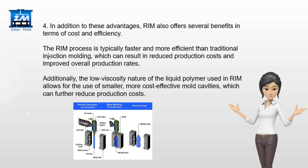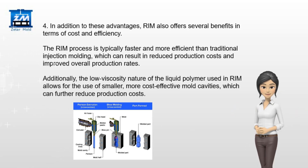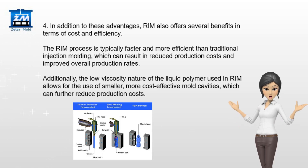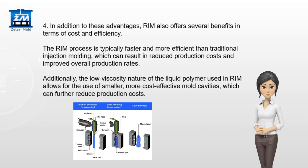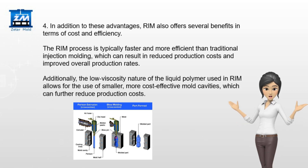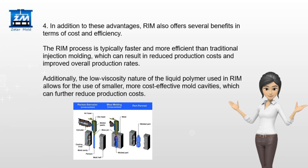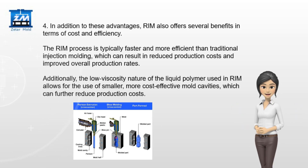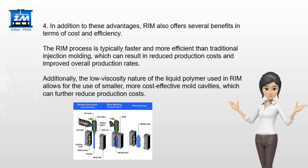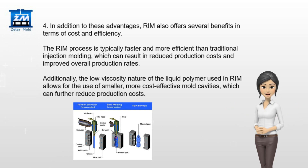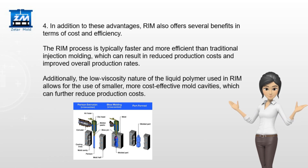In addition to these advantages, RIM also offers several benefits in terms of cost and efficiency. The RIM process is typically faster and more efficient than traditional injection molding, resulting in reduced production costs and improved overall production rates. Additionally, the low-viscosity nature of the liquid polymer used in RIM allows for the use of smaller, more cost-effective mold cavities, which can further reduce production costs.